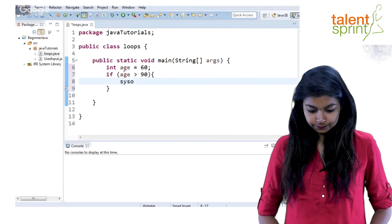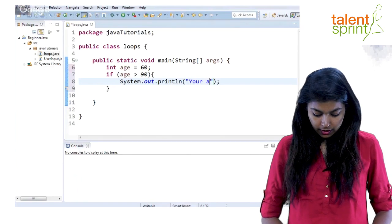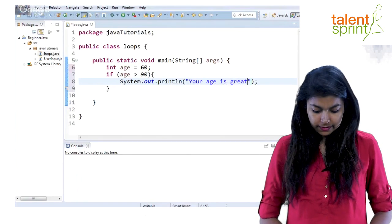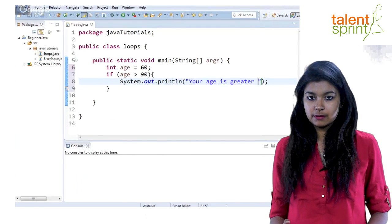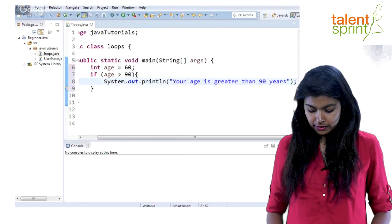So let's just say your age is greater than 90. A very simple system dot out statement I'm writing here. You can do some set of instructions also depending on the program.